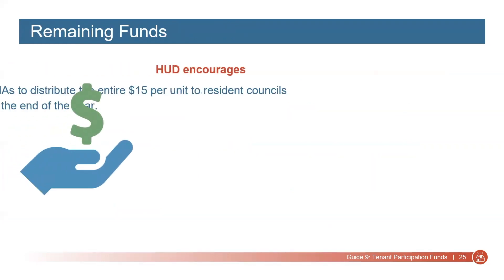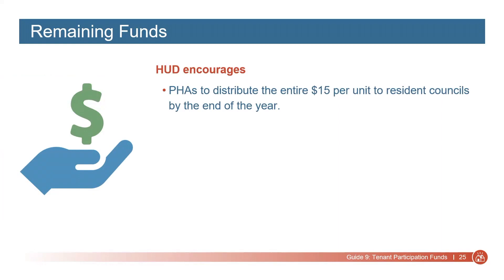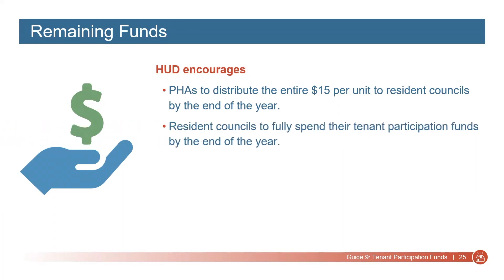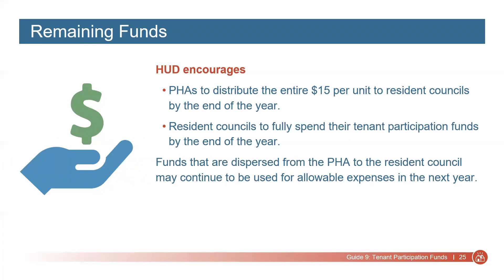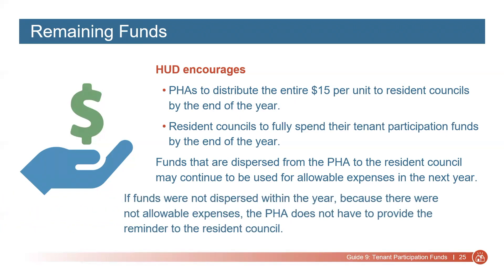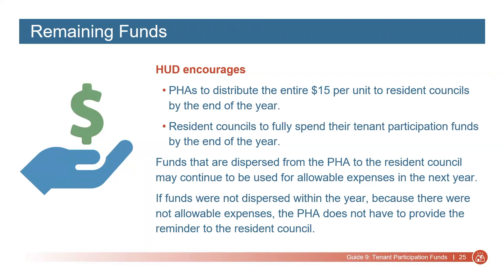HUD encourages housing agencies to distribute the entire $15 per unit to resident councils by the end of the year. HUD also encourages resident councils to fully spend their tenant participation funds by the end of the year. At the end of the year, any tenant participation funds in the resident council's accounts may remain for future allowable expenses. However, if the funds have not yet been paid out by the housing agency because there were not allowable expenses approved, the PHA does not have to pay the resident council balance. If the council has funds from other sources, these can likely carry over from year to year, and the resident council may be able to reallocate and use tenant participation funds to pay for eligible expenses in order to fully use all of their TP funds by the end of the year.